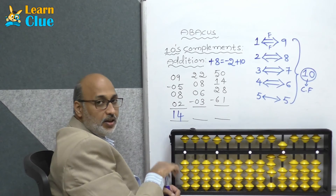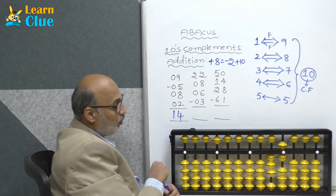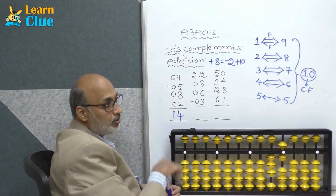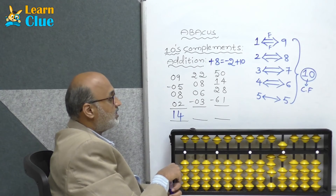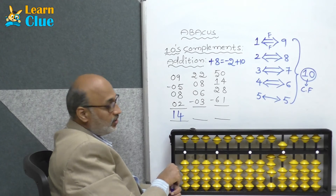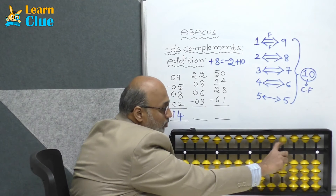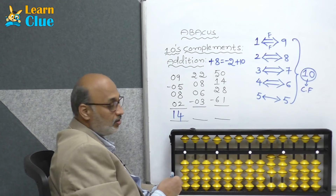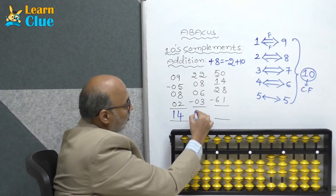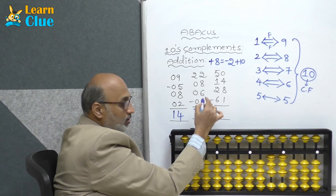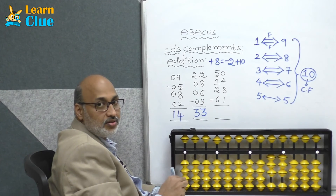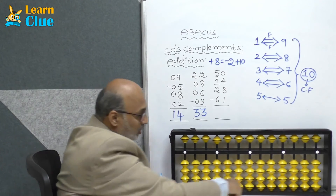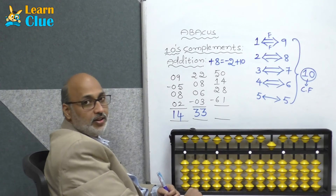Now they are asking minus 3. How to do minus 3? Who is the friend of 3 in 5s complements? 2. So minus 3 technique is nothing but plus 2 minus 5. What is the answer? Answer is 33.